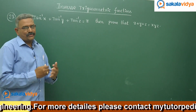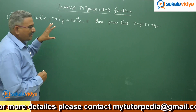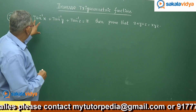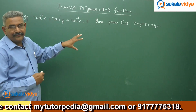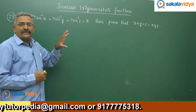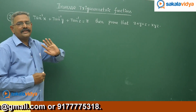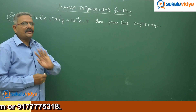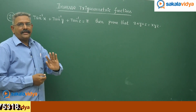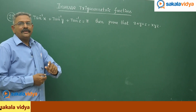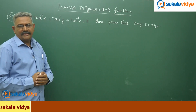Let us do it. First, assume each of them as a, b, c. Then it is enough to prove that tan a + tan b + tan c = tan a · tan b · tan c, provided a + b + c = 180 degrees.